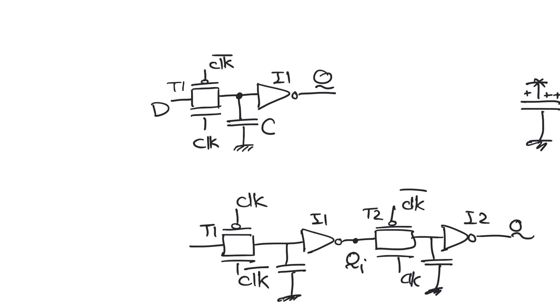When clock is equal to zero, transmission gate T1 is off and what we have is the capacitor C storing the last value of D that it has seen. So this is the last value of D and it's keeping it at the input of the inverter I1 and therefore Q is going to be equal to the last value of D that we saw.